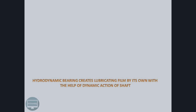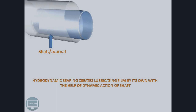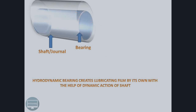Firstly, we will discuss about the parts of the hydrodynamic bearing. We have a shaft or journal and we have a bearing in which the shaft is placed. The upper portion is the bearing and the inner portion is the shaft or journal.